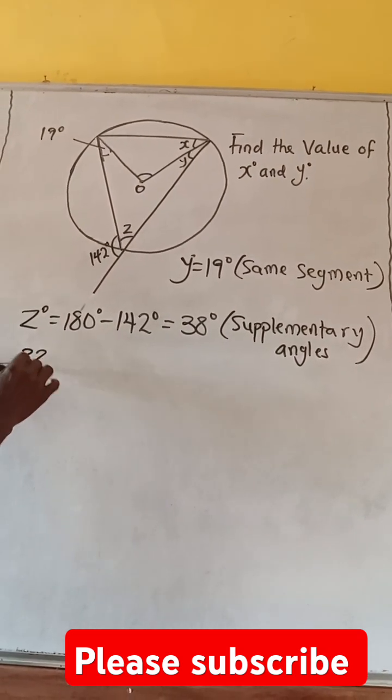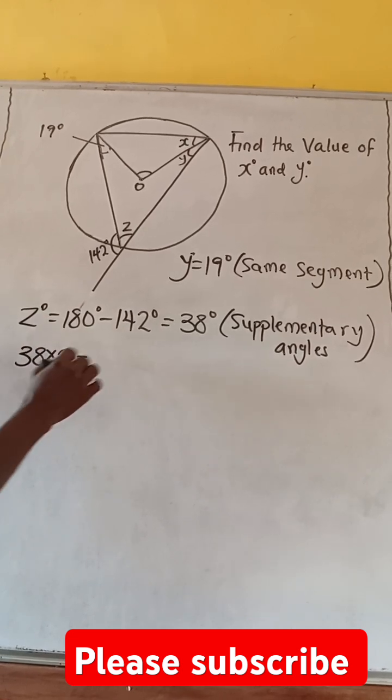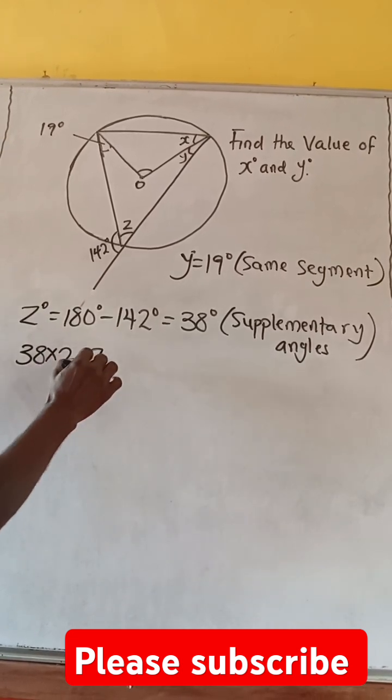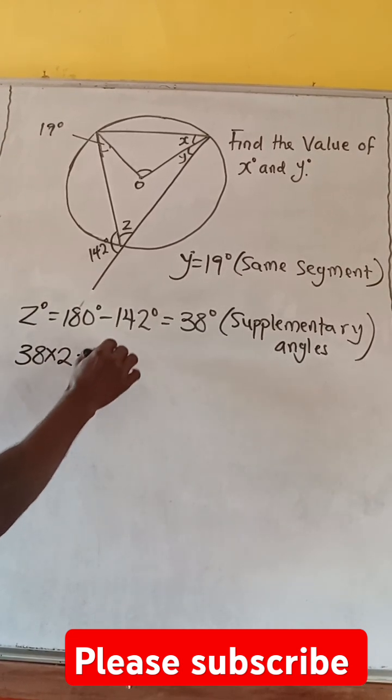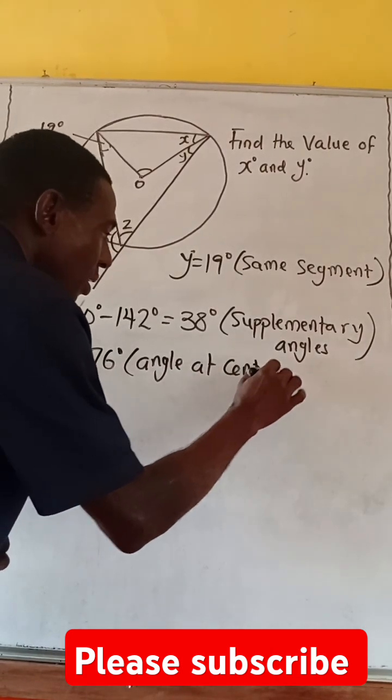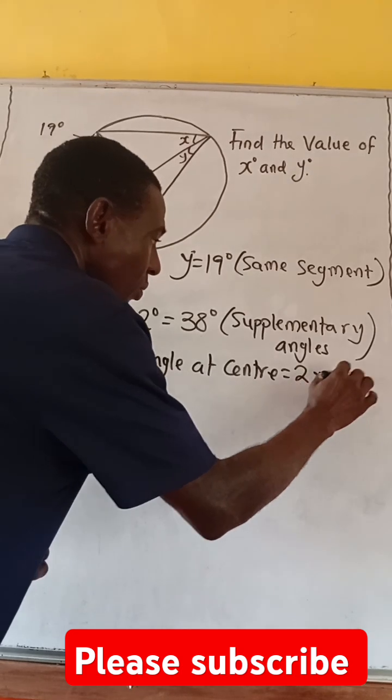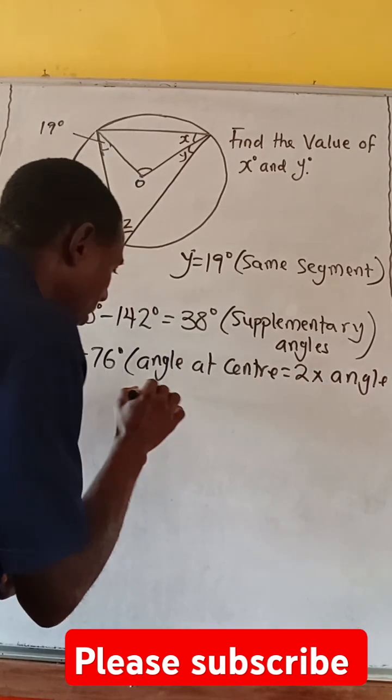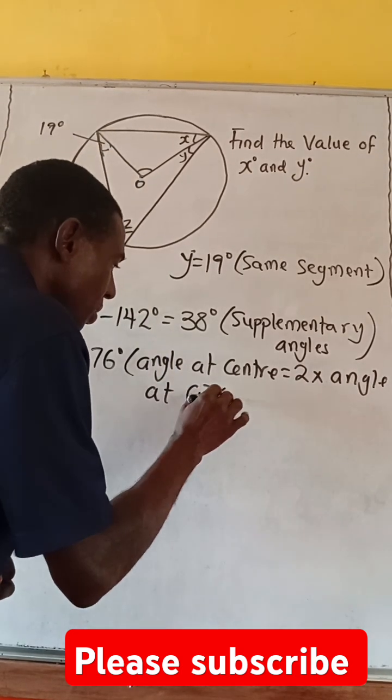So, meaning that we have 38 times 2. That will give us 76 degrees. So, this is just angle at the center equals 2 times angle at circumference.